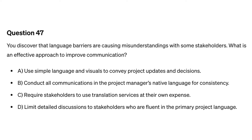Question forty-seven. You discover that language barriers are causing misunderstandings with some stakeholders. What is an effective approach to improve communication? A. Use simple language and visuals to convey project updates and decisions. B. Conduct all communications in the project manager's native language for consistency. C. Require stakeholders to use translation services at their own expense. D. Limit detailed discussions to stakeholders who are fluent in the primary project language.